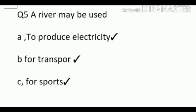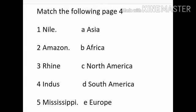Page number 4, one more exercise given: match the following. Do the answer properly. First one Nile, second Amazon, third Rhine, fourth Indus, and fifth one is Mississippi. Options are Asia, Africa, North America, South America, and Europe.